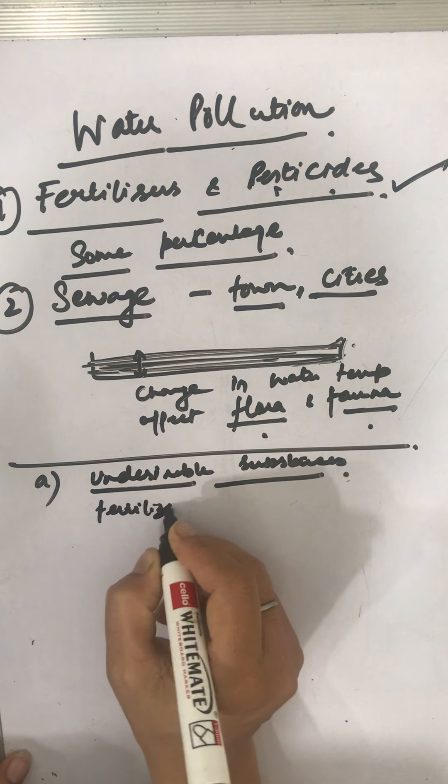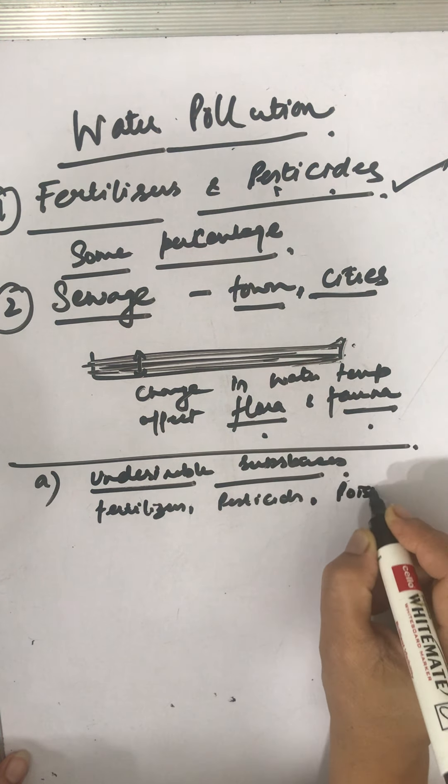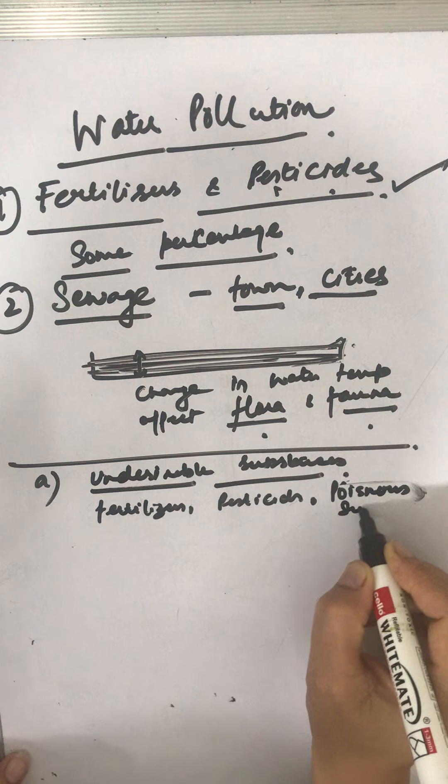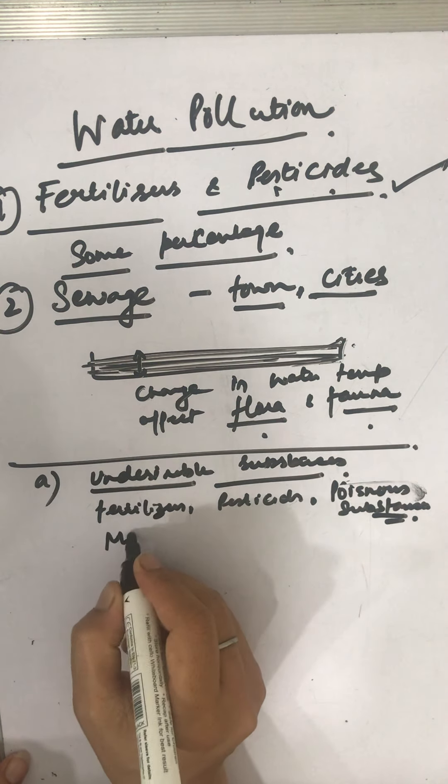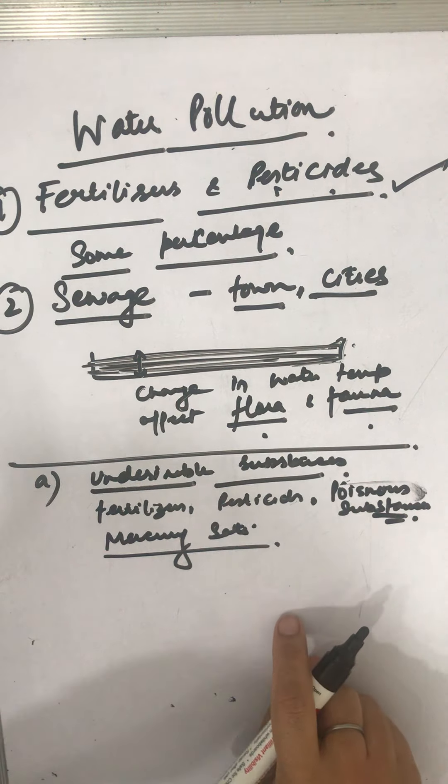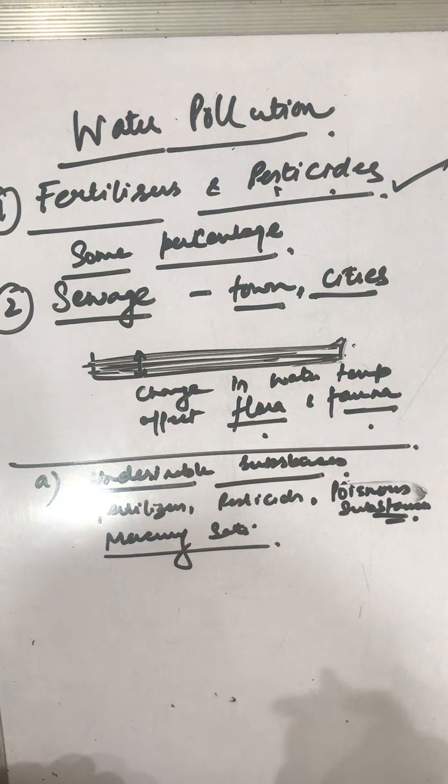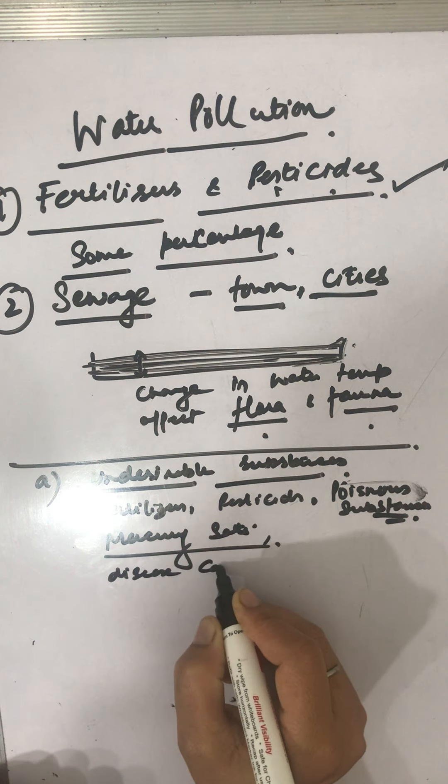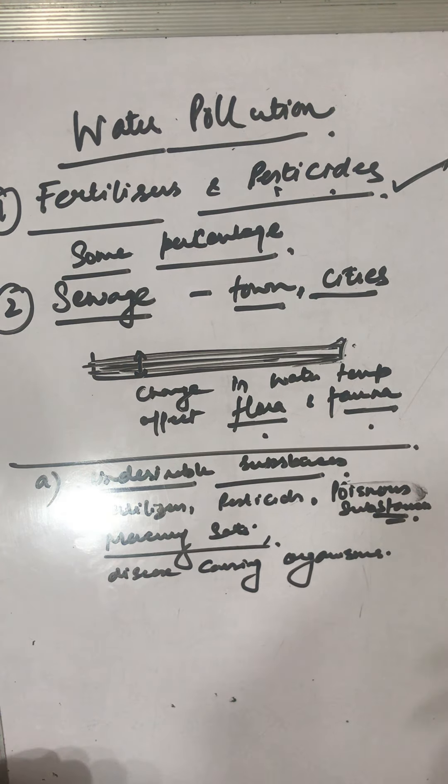Now, addition of undesirable substances into the water bodies - these substances could be the fertilizers, pesticides which are used, and could be poisonous substances as well. These poisonous ones are mercury salts, which are used in the paper industry. These could also be disease-causing organisms like the bacteria which cause cholera, and disease-causing organisms which we call pathogens.